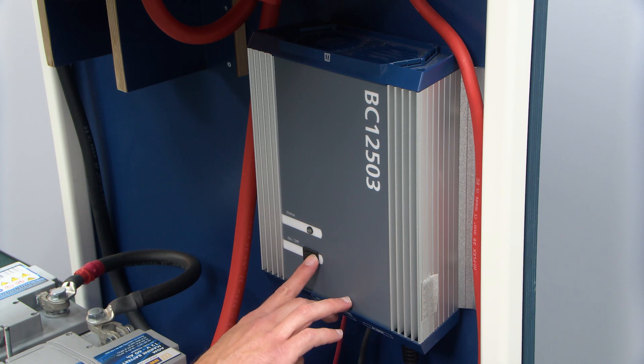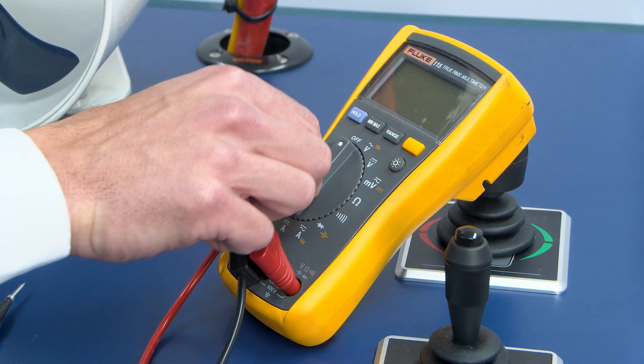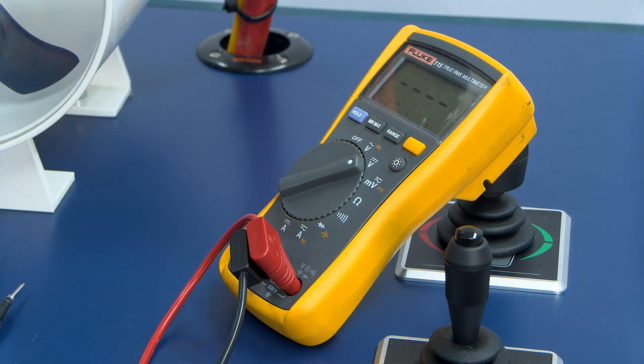Before measuring, be sure that you have switched off the battery charger. Then, make sure your multimeter is set in the DC voltage range. Now you can start measuring.